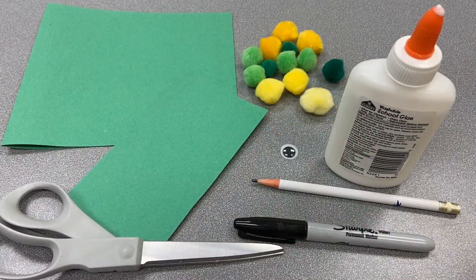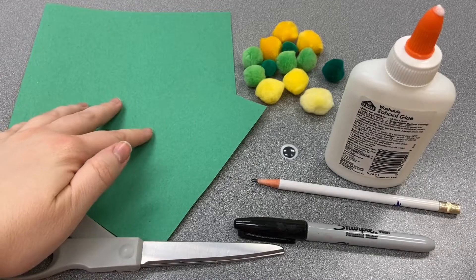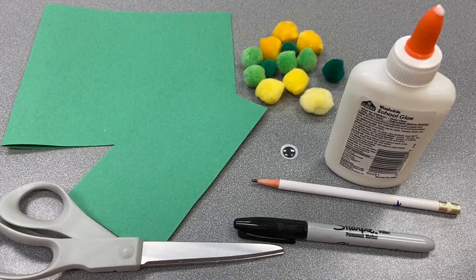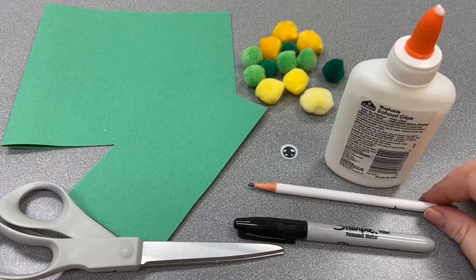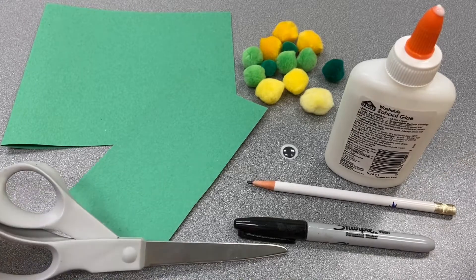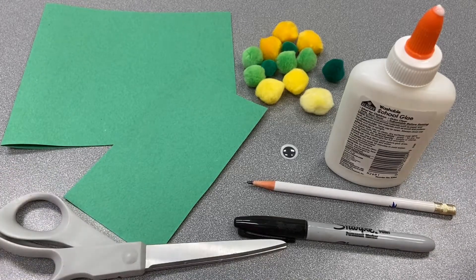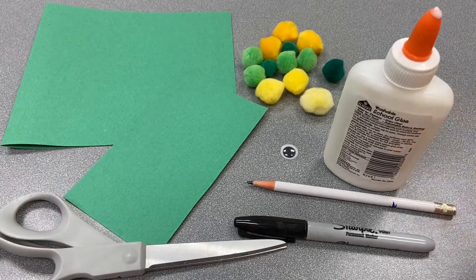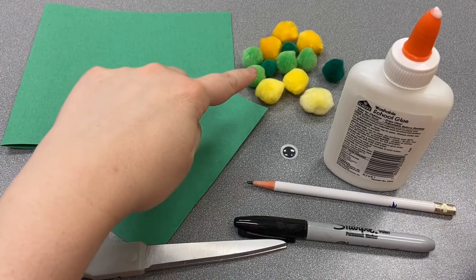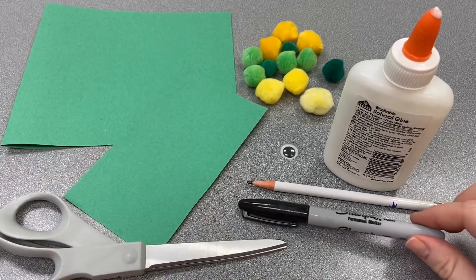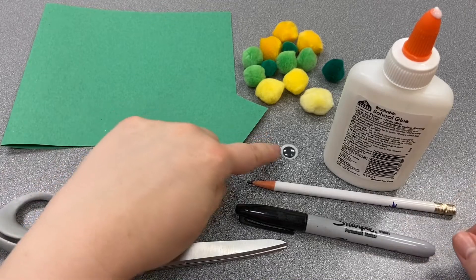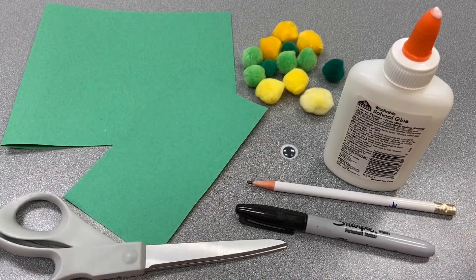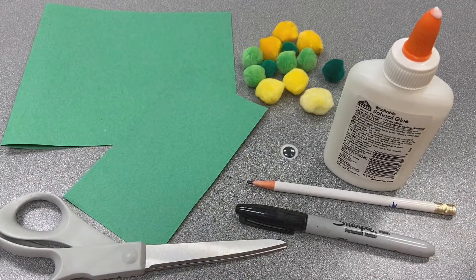For this project you will need some green construction paper, a pencil, some scissors, glue, some assorted pom-poms, a marker, and just one little googly eye. That's all you need. Let's get started.